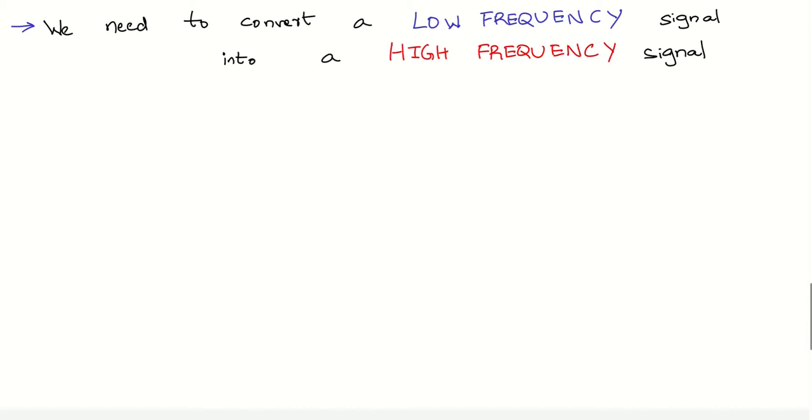We have seen that we need to convert a low frequency message signal into a high frequency message signal before transmitting it. This process of converting a low frequency message signal to a high frequency message signal is known as modulation.